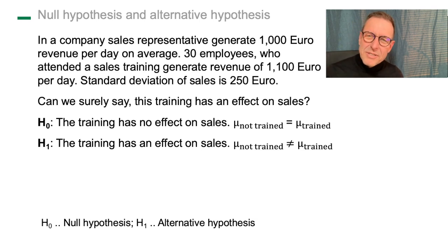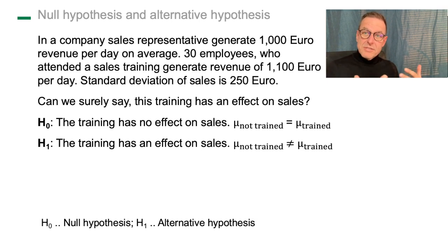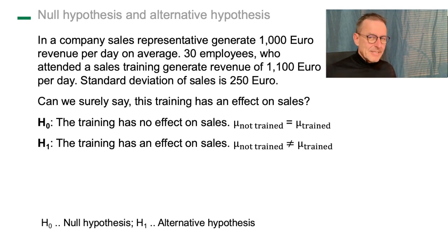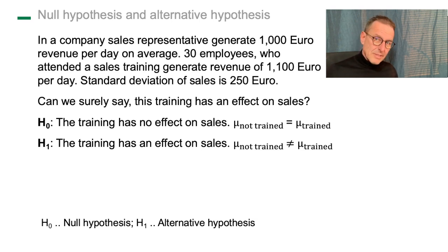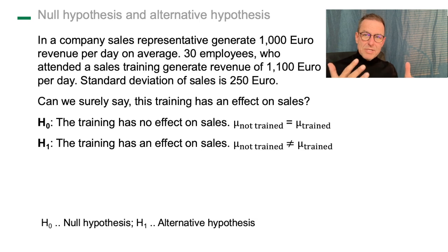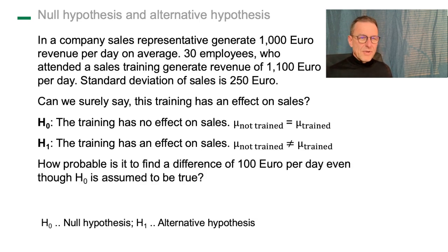You might say, but it has an effect — there is 100 euro difference! Yeah, but it could be random. The null hypothesis says the training has no effect — this 100 euro, that's just by chance. There is actually no real difference between those who are not trained and those who are trained. The alternative hypothesis H1 is: the training has an effect on sales, the mean of those who are not trained is not equal to those who are trained. Which one is true? Should we reject the null hypothesis or not? In other words, how probable is it to find a difference of 100 euro per day even though the null hypothesis is assumed to be true?